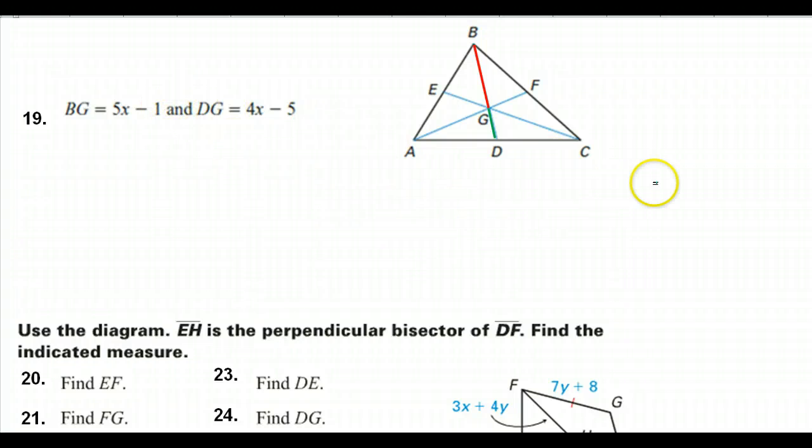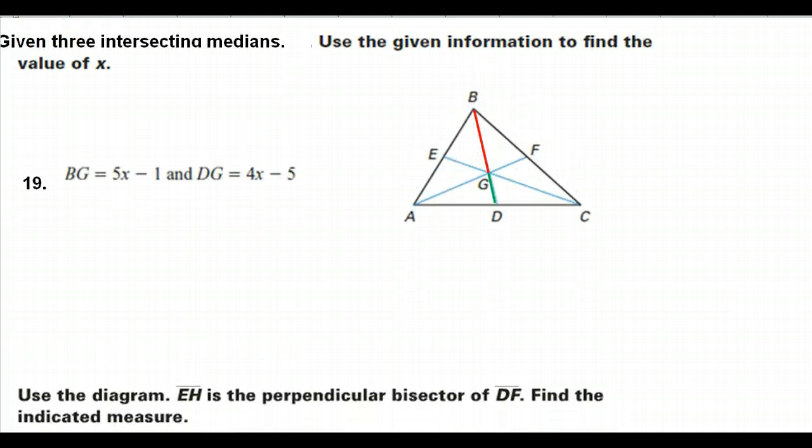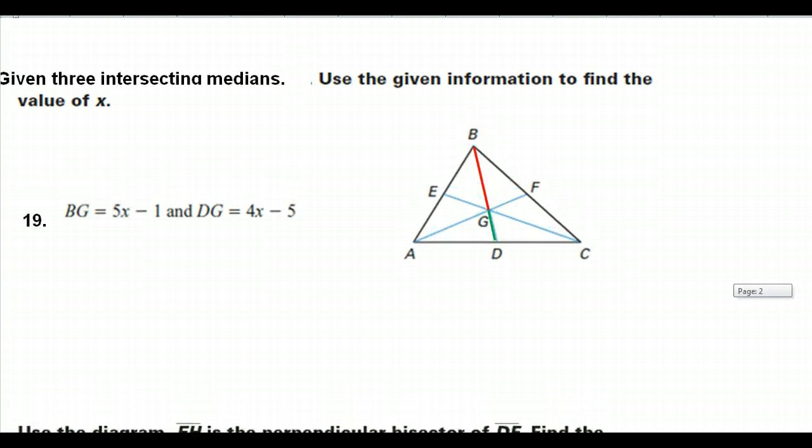It is time to talk about number 19. We are given that these are intersecting medians. Because we know that these are medians, then we know that we are talking about the centroid.